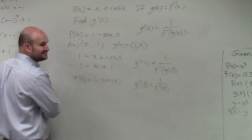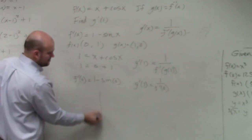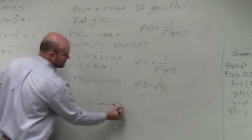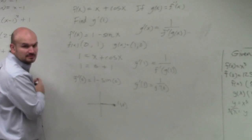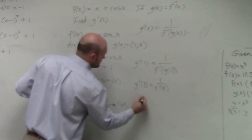And then, what happens when I plug in 0 into my f inverse function? Sine of 0 is 0. Here's your 0, what's the sine of that point? 0. 1 minus 0 is 1.